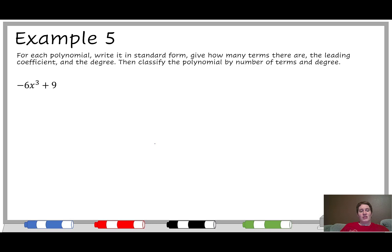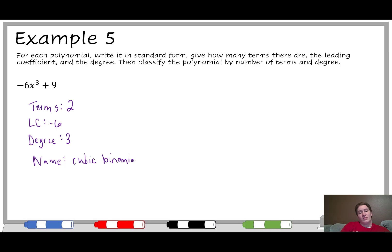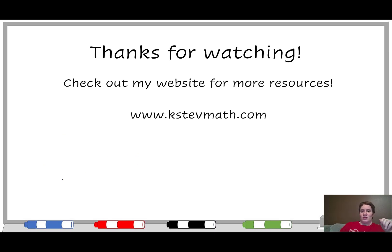Example five: this is already in standard form because x cubed is the biggest exponent and 9 has no x, so it has a degree of zero and goes last. There are two terms. The leading coefficient is negative 6 — and the negative part does matter, that's the biggest thing we care about with leading coefficients. The degree is 3, making this a cubic binomial.